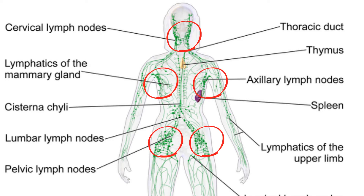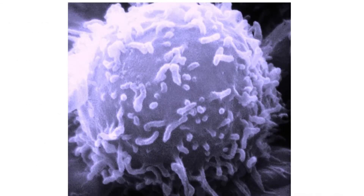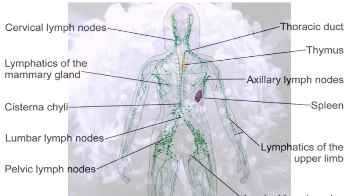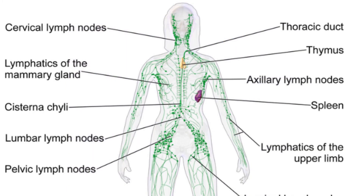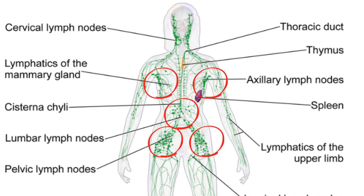In the lymph nodes, cells from the body's immune system called lymphocytes help fight bacteria and viruses. These nodes are located throughout your body, including under your arms, at your hips, and in your abdomen.